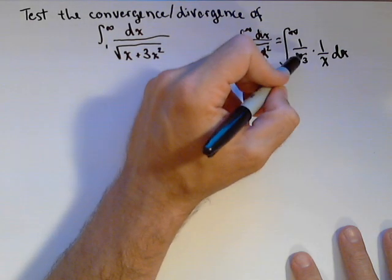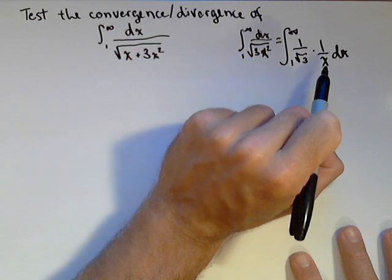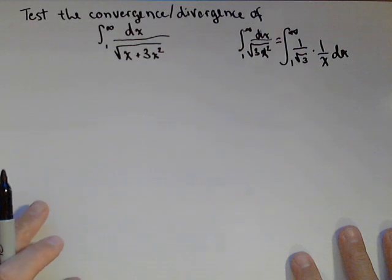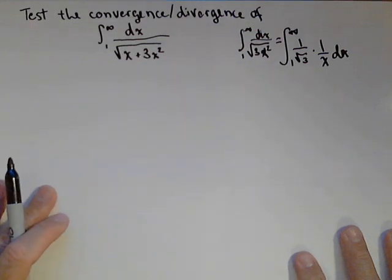So it's a constant times an integral we know diverges. So, initially, our instincts is that this thing is gonna diverge. And so that's what we're gonna try testing for.